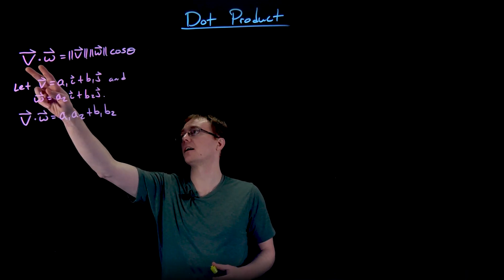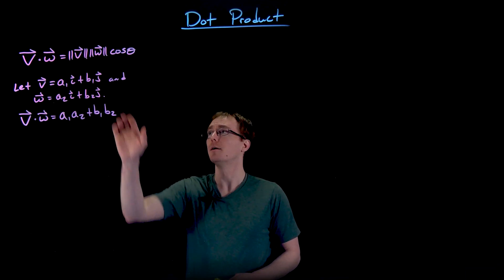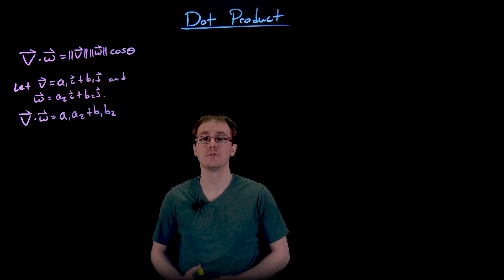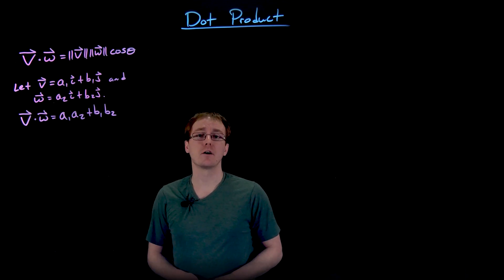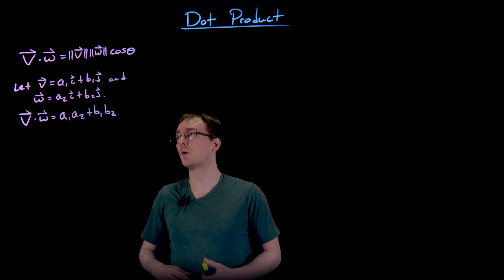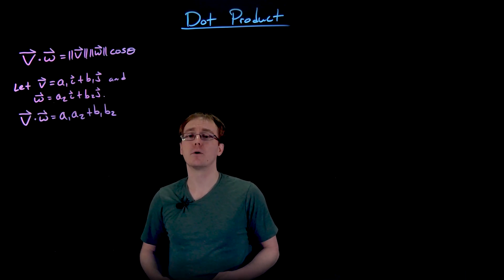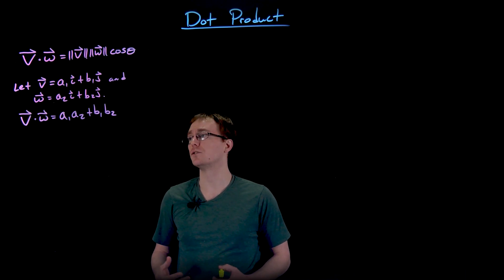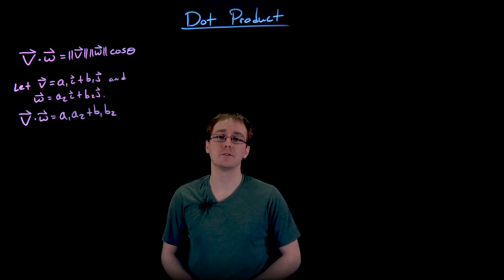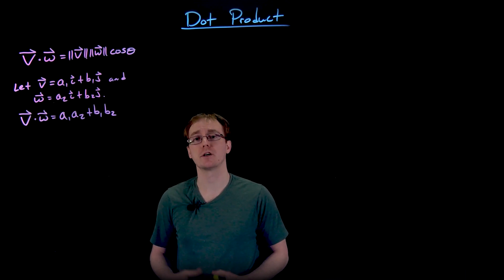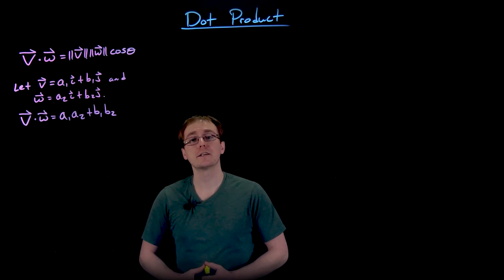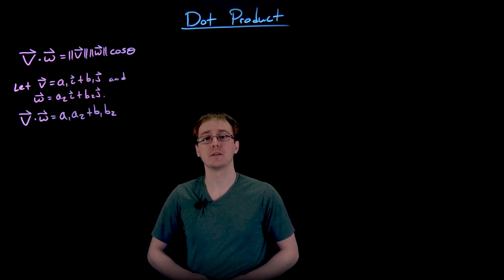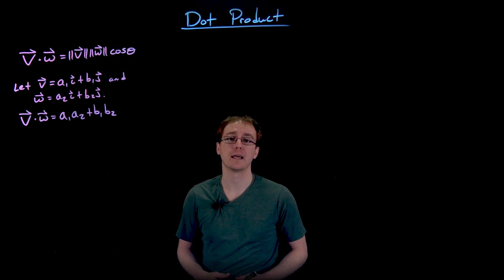The two versions of the dot product I'm referring to are the component version and the trigonometric version. In the trigonometric version we say that v dotted with w is equal to the magnitude of v multiplied by the magnitude of w, also multiplied by cosine of theta, where theta is the angle between our two vectors. If we know the components of our vectors v and w — say a1 and b1 for v, and a2 and b2 for w — we can also compute the dot product algebraically as a1 times a2 plus b1 times b2, taking the sum of the products of the respective components.